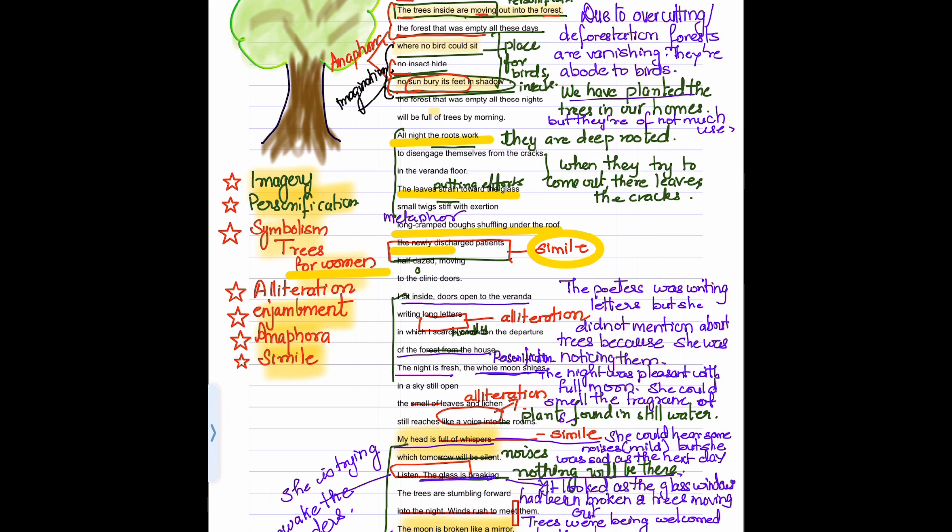The roots are deep rooted. To disengage, to come out of the roots, they have to pull themselves from the cracks in the verandah floor. The trees are planted in the house. The leaves sit towards the glass. Small twigs stiff with exertion. Exertion means tired. They are putting all their efforts. Small twigs. They have become stiff.